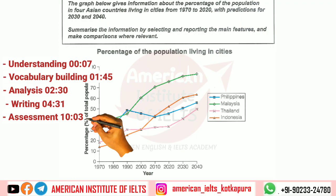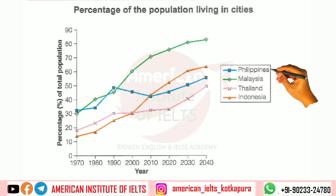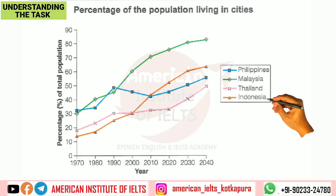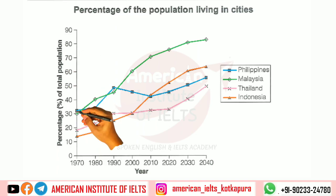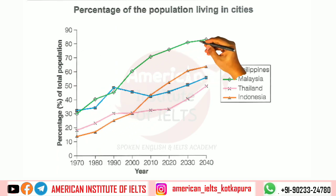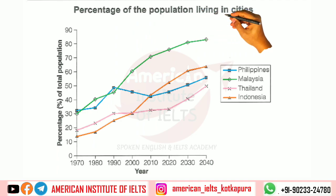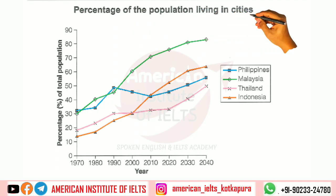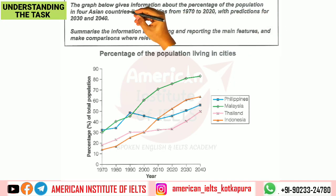So as always, let's first pay attention to the illustration. This line chart has four lines which talk about Philippines, Malaysia, Thailand, and Indonesia. The y-axis gives us the percentage of total population, showing year by year population figures. At the top it shows the percentage of population living in cities — that is, the variation in the share of people living in urban areas.